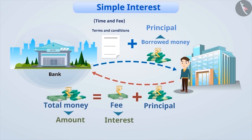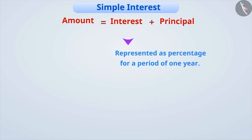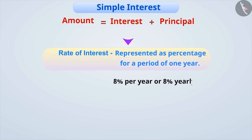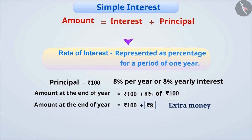Generally, the interest for a period of one year is expressed in percent, which we call the rate of interest. If the rate of interest is 8% per year and the principal is Rs.100, then at the end of the year, along with Rs.100, one needs to give 8% of Rs.100, which is equal to Rs.8 extra. Here, the amount is equal to 100 plus 8, which is Rs.108 to be given.